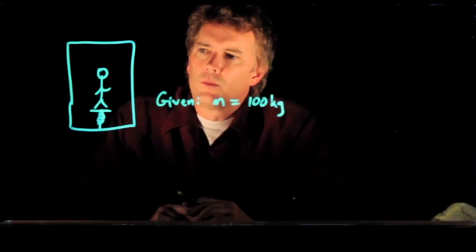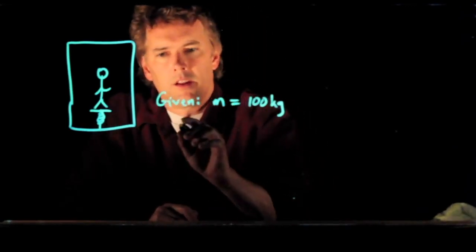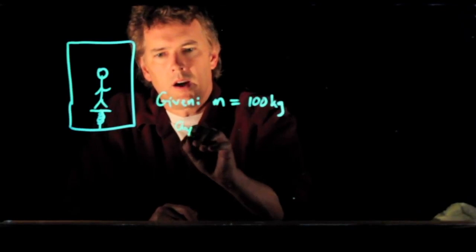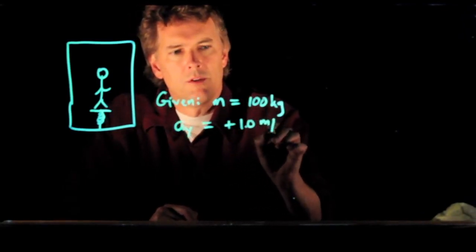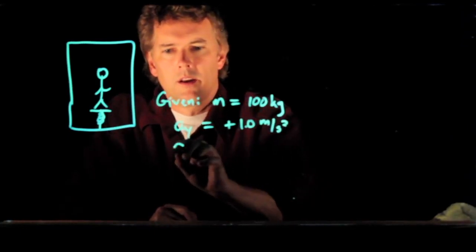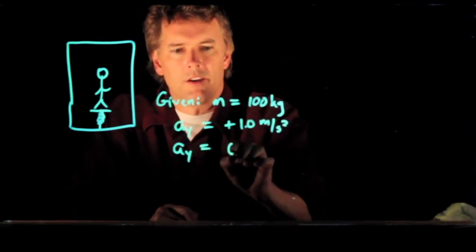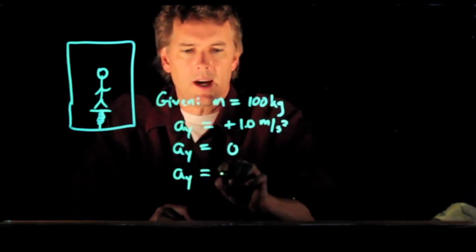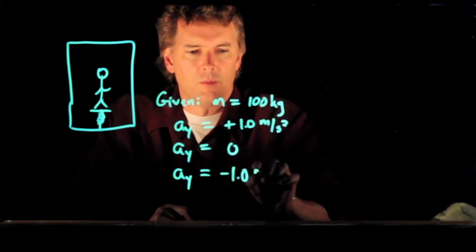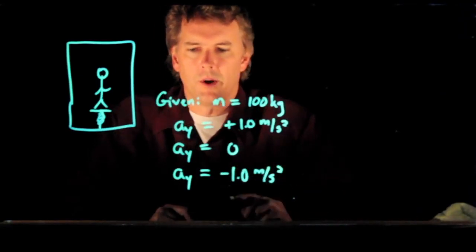We'll say that the acceleration when it's going up is positive 1.0 meters per second squared. When it's moving up at constant velocity, the acceleration is zero. And when it's slowing down, it is negative 1.0 meters per second squared.